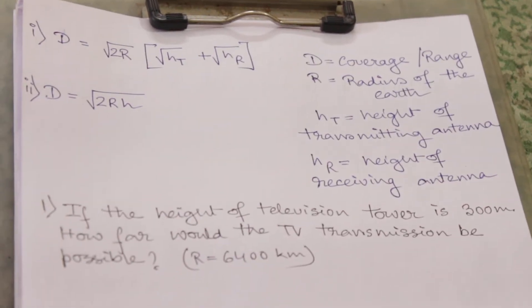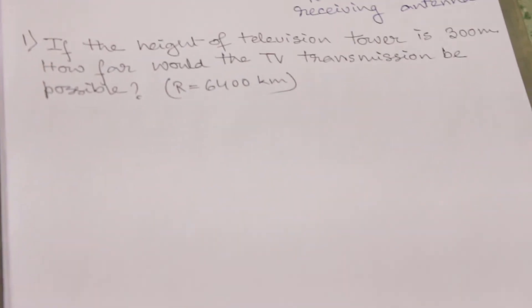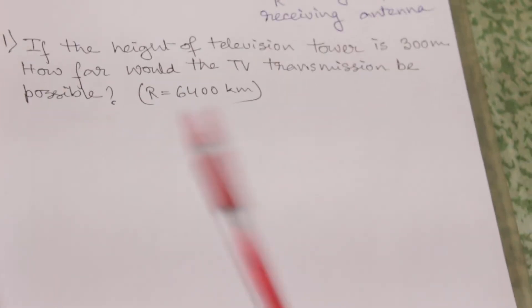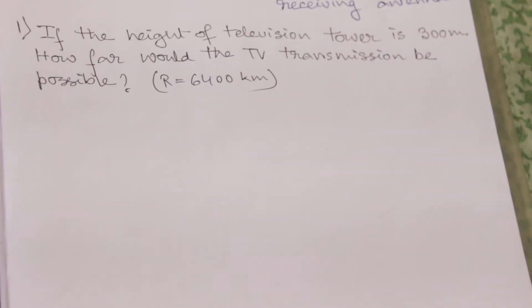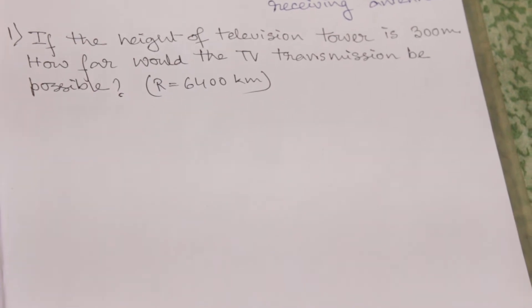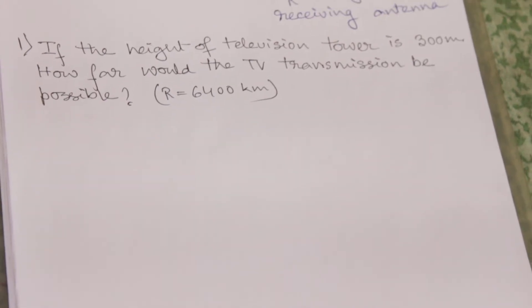So let's illustrate this with some examples. If the height of the television tower is 300 meters, how far would the TV transmission be possible? You can see here only one height is given.